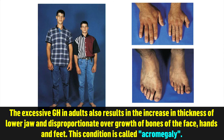The excessive growth hormone in adults also results in the increase in the thickness of the lower jaw and disproportionate overgrowth of bones of the face, hands, and feet. The above condition is known as acromegaly.